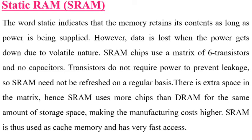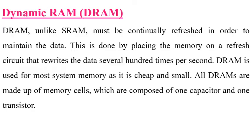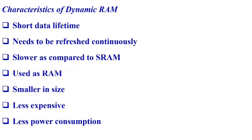The characteristics of Static RAM are: long life, no need to be refreshed, faster speed, used as cache memory, but it is large in size, expensive, and has high power consumption. Dynamic RAM (DRAM) must be continually refreshed in order to maintain data. This is done by placing the memory on a refresh circuit that rewrites the data several hundred times per second. DRAM is used for most system memory as it is cheap and small. All DRAMs are made up of memory cells composed of one capacitor and one transistor. The characteristics of DRAM are: short data lifetime, needs continuous refreshing, slower than SRAM, used as main RAM, smaller in size, less expensive, and lower power consumption.